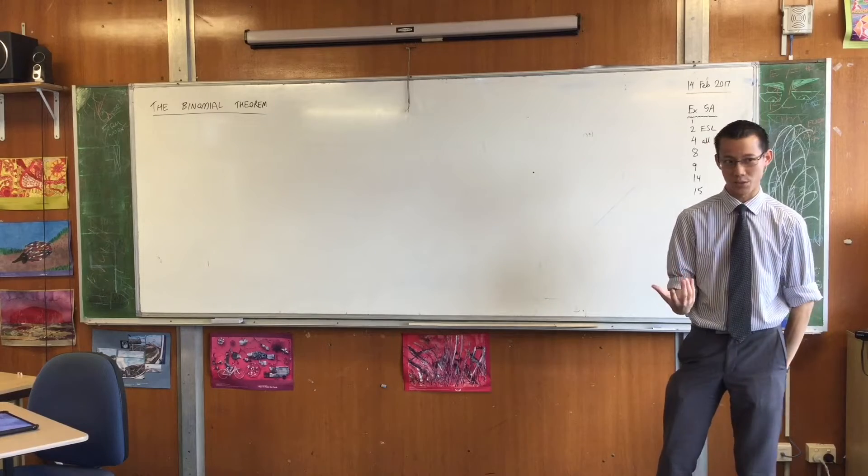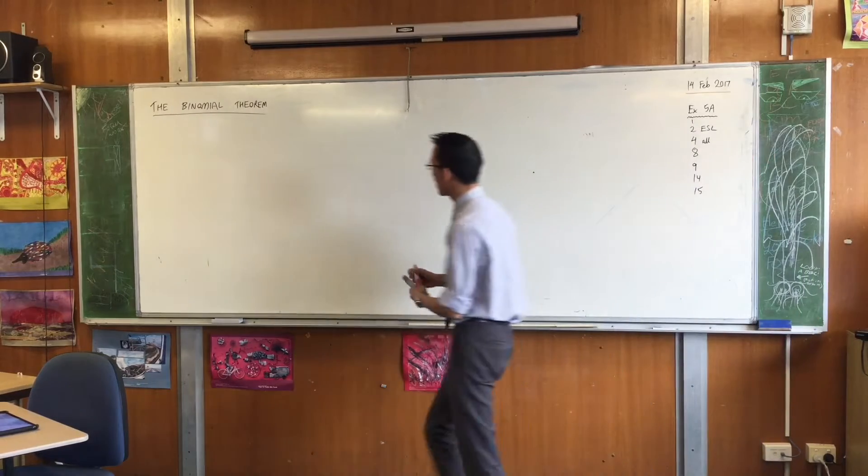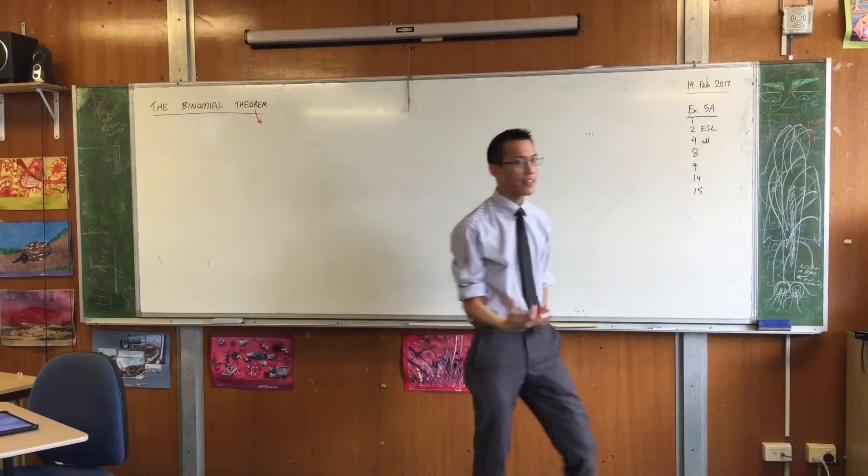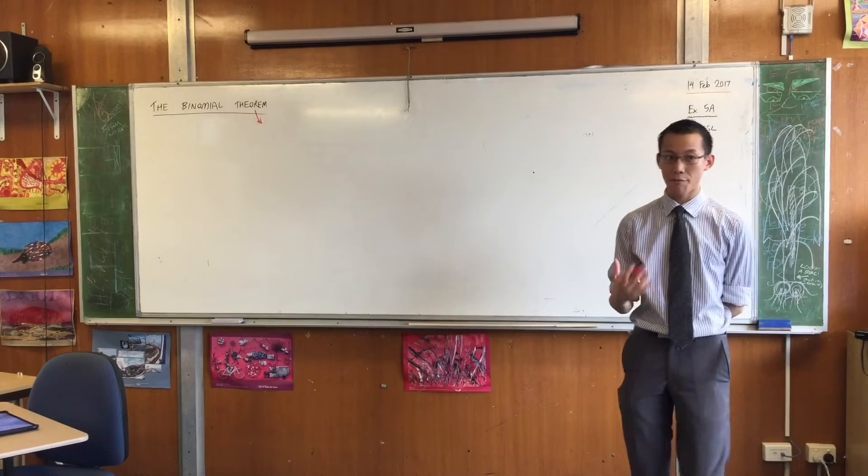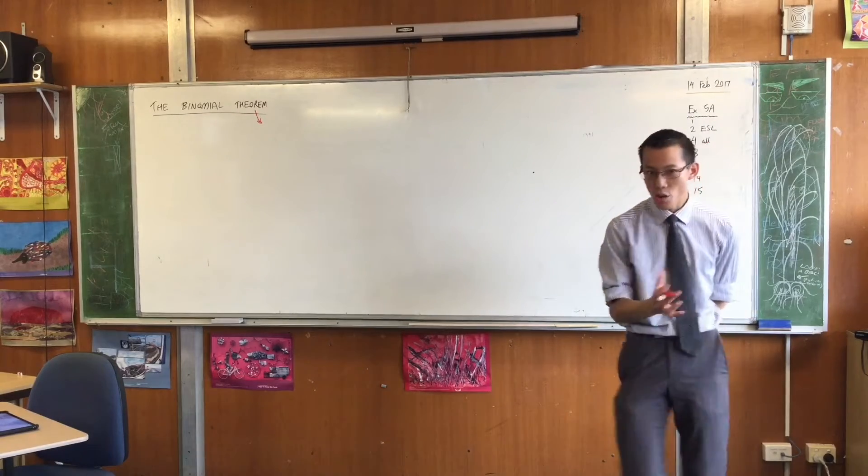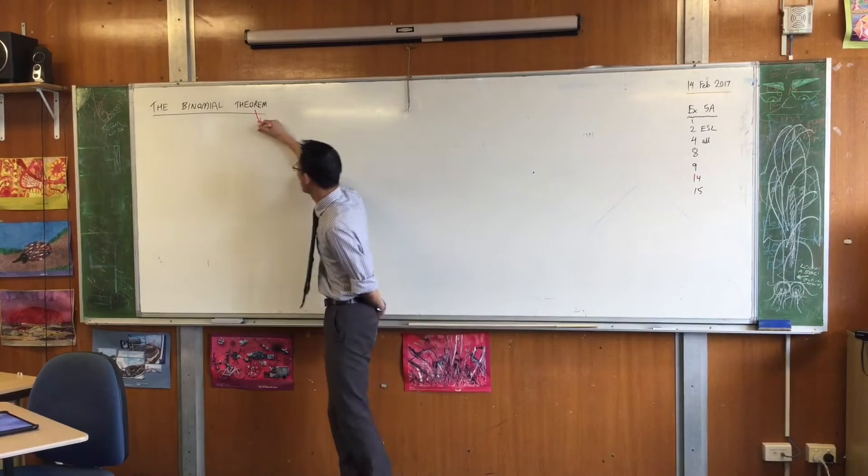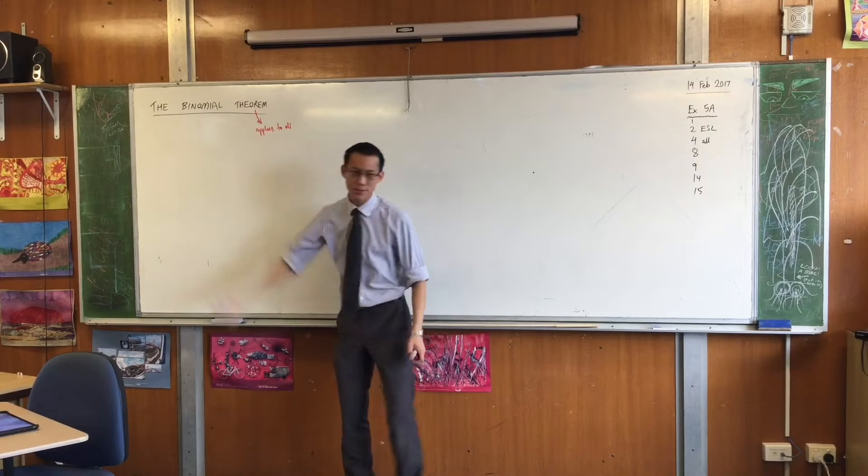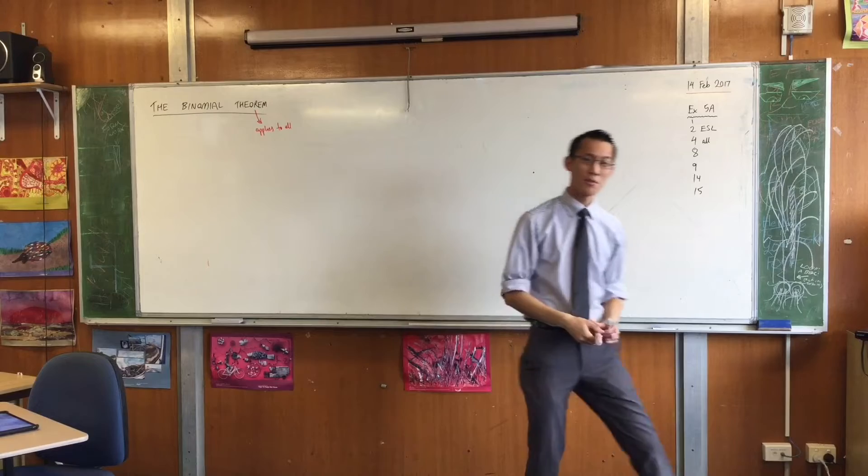So when you say theorem, like Pythagoras' theorem, Pythagoras' theorem applies to every right-angled triangle that exists. The binomial theorem applies to all, and as the name suggests, they're these things called binomials.